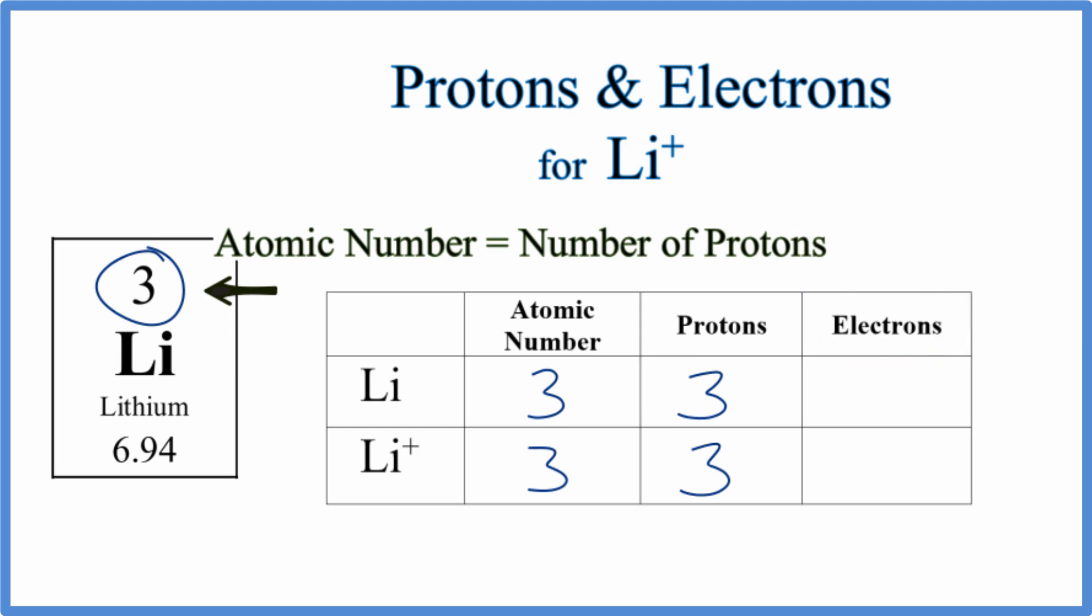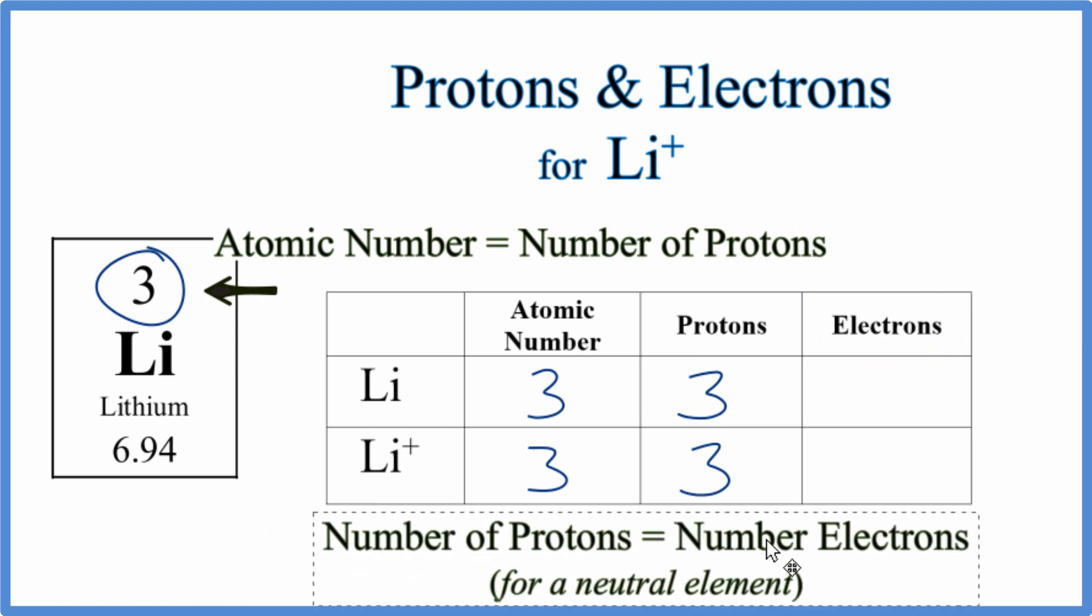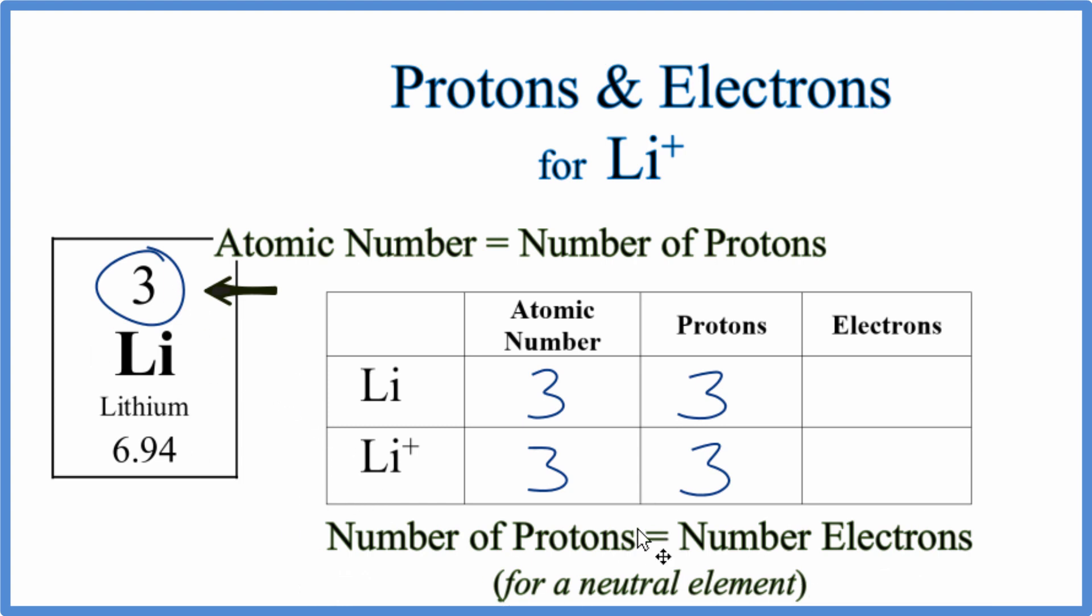To find the number of electrons, we need to realize that for neutral lithium on the periodic table, the number of protons equals the number of electrons. So we have three electrons, but for ions that's what's different: the electrons.